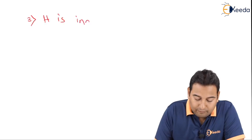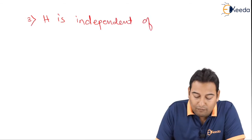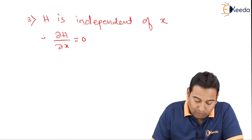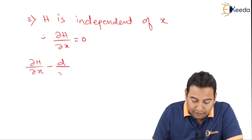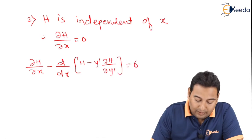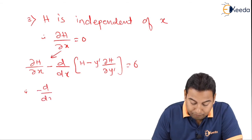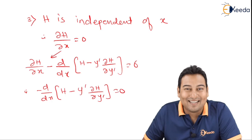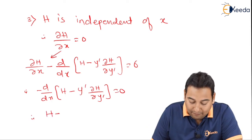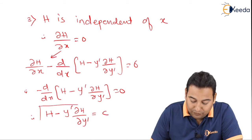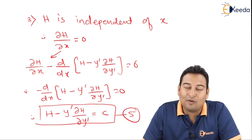Finally, Case 3: h is independent of x, therefore ∂h/∂x = 0. This appears only in equation number 2: ∂h/∂x − d/dx(h − y'·∂h/∂y') = 0. Substituting ∂h/∂x = 0 gives: −d/dx(h − y'·∂h/∂y') = 0, so h − y'·∂h/∂y' = c. This is the fifth and final equation. So we have two main equations and three special cases, all required for solving problems of this type.